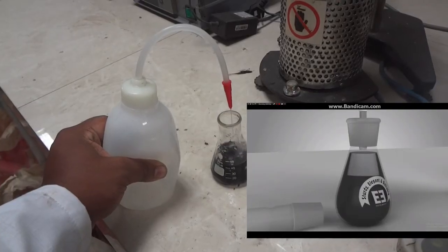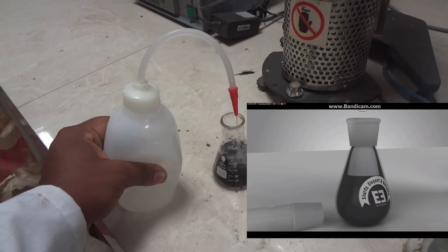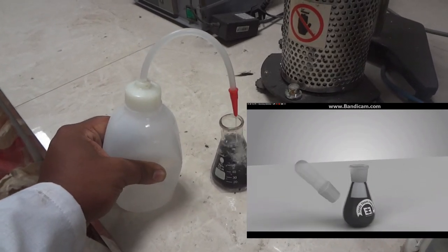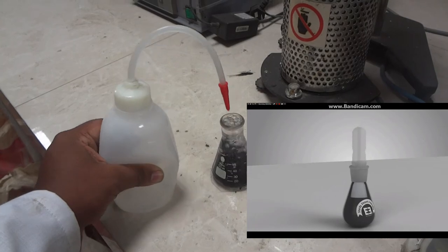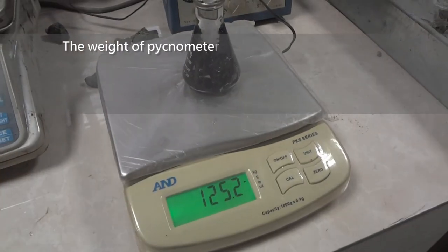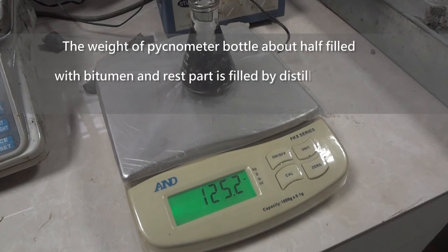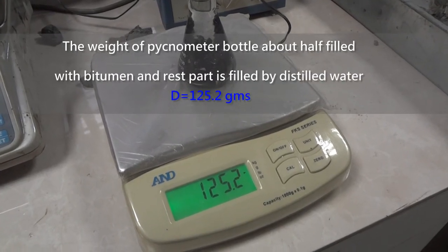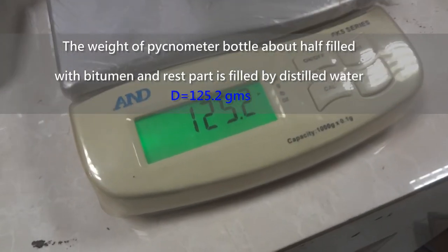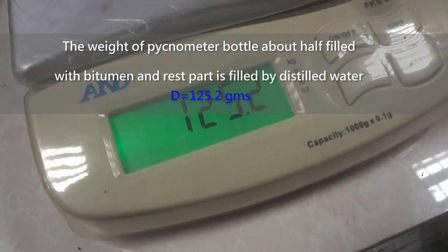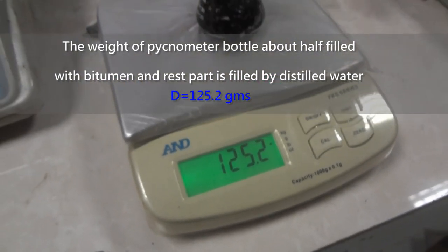Now the remaining space of pycnometer is filled with distilled water. Weigh the pycnometer, which is half filled with bitumen and the rest part is filled with distilled water. The weight is 125.2 grams, which is D.